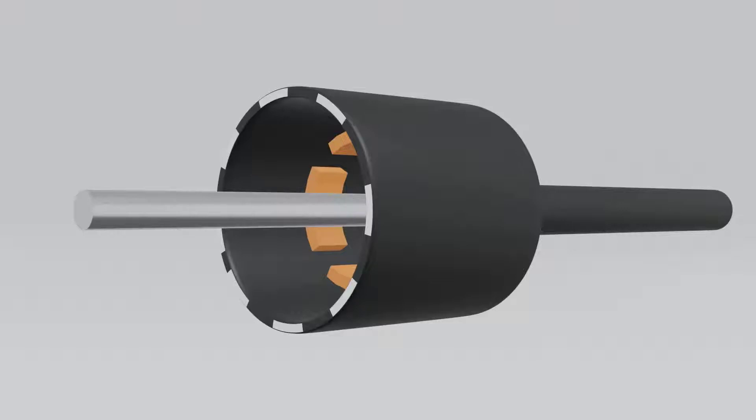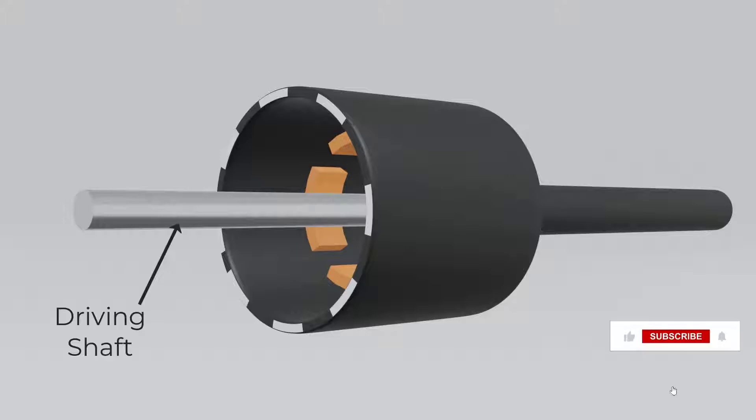Namaste. In this video we are going to learn how the centrifugal clutch works. Before we start, let's see its different parts. As you can see, it contains a number of different parts. The first part is the driving shaft, which is basically connecting to the engine.